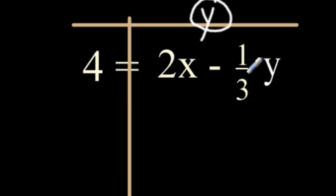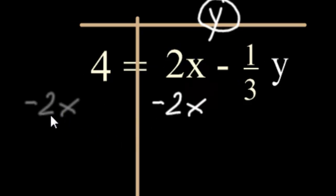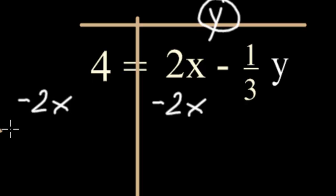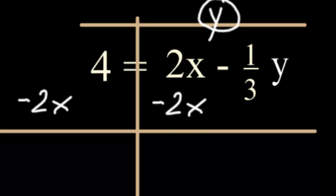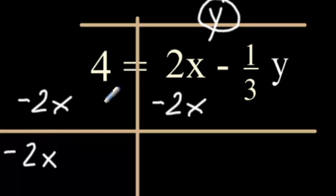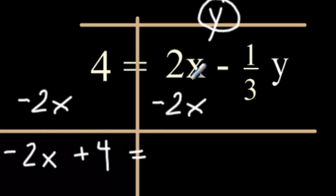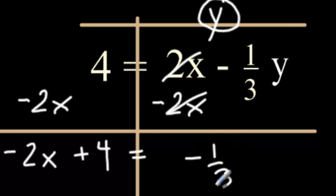The first and easiest term to get rid of is this 2x. Do that by subtracting 2x from both sides. Once again, on the left, you can't subtract the 2x from the 4, so just put it aside. Start dropping things down. The negative 2x drops down. The 4 we didn't touch — it's positive — that also drops down. 2x minus 2x cancels out. I'm left with a negative one-third y on the right side.